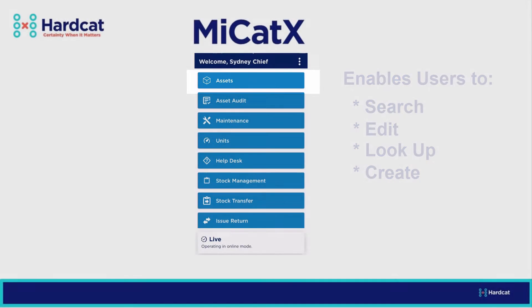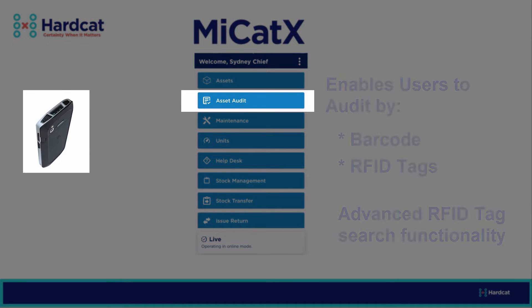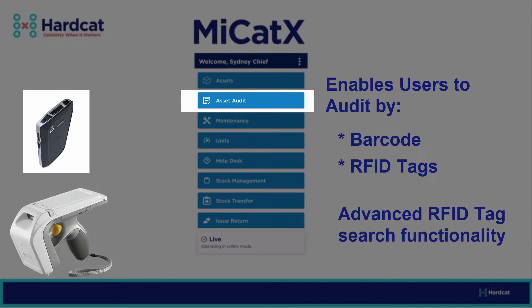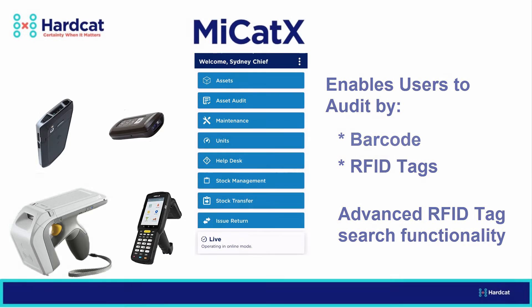Asset Audit, where you can audit your assets using your device's in-built camera, or if you have a device with an in-built barcode scanner. Or you can use the bulk RFID audit capability, or you can use a function to find an RFID tag.